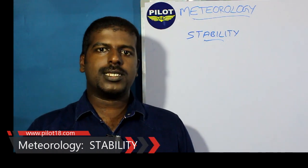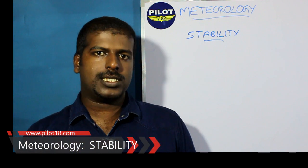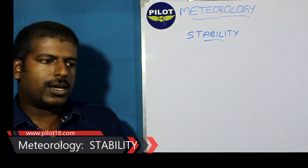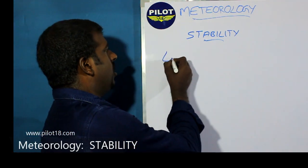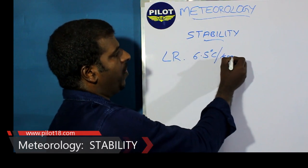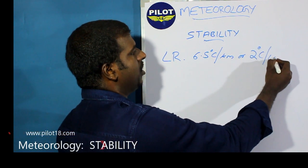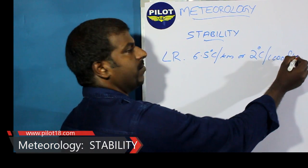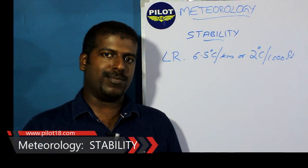Today in this class we will learn more about stability. What is stability in the atmosphere? Actually it is a factor of temperature, we can say. We learned about lapse rate, that is 6.5 degrees Celsius per kilometer or 2 degrees Celsius per 1000 feet. That is what we learned in the first chapter of atmosphere.